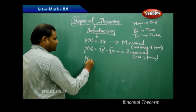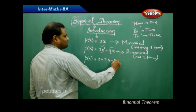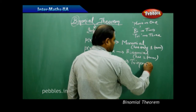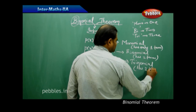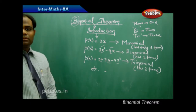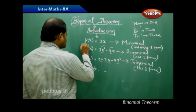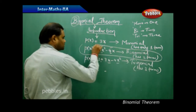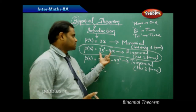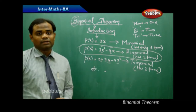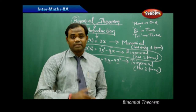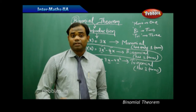Proceeding with the trinomial: if I have 2 + 3x − 4x², it has three terms and is called a trinomial. The topic of binomial theorem is exclusively to study these binomial polynomials — polynomials which have two terms — focusing on their expansions and various properties related to them.